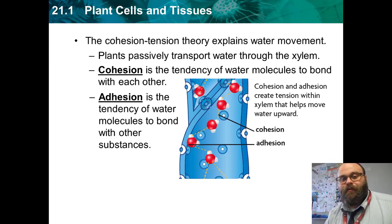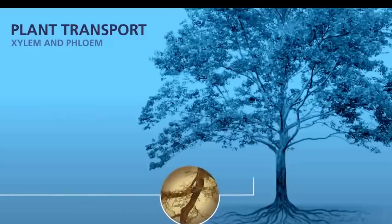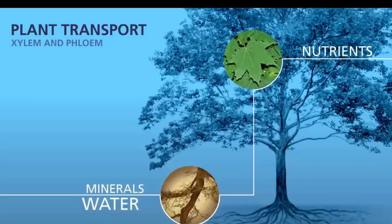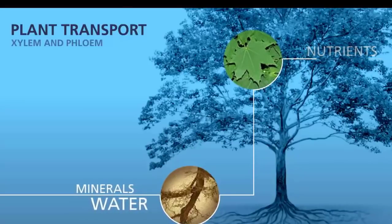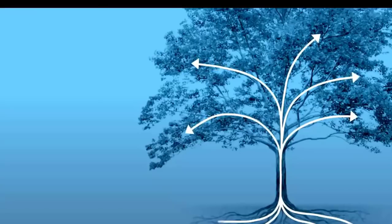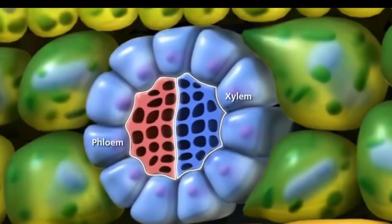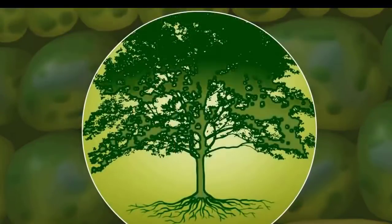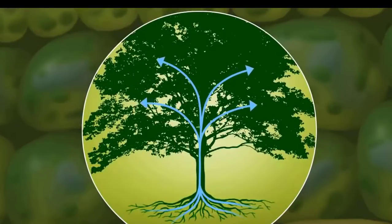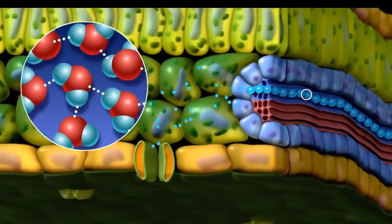We know that water travels from the roots of plants up to the rest of the plant, but how does that happen? There are no moving parts on a macro level inside plants — plants don't have any muscles or moving parts. They take advantage of something called capillary action, which is a combination of cohesion, adhesion, and transpiration inside a plant.